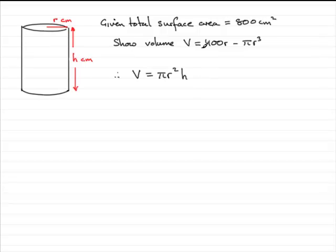Now what I notice in what we've got to show, we've got the letter h here, and there's no h in what we've got to show. So I've got to find another way of expressing h in terms of the radius. And to do that, I use this fact here, that the total surface area is 800 centimeter squares.